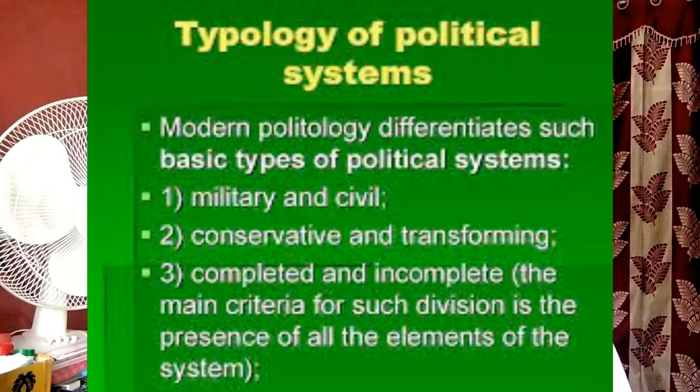How is the US political system structured? The federal government is composed of three distinct branches — legislative, executive, and judicial — whose powers are vested by the US Constitution in the congress, the president, and the federal courts respectively.